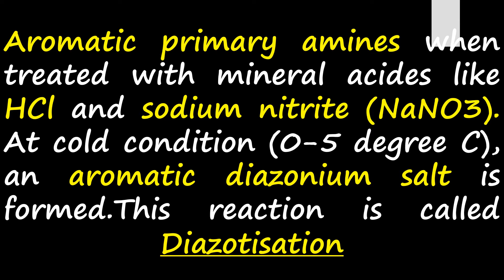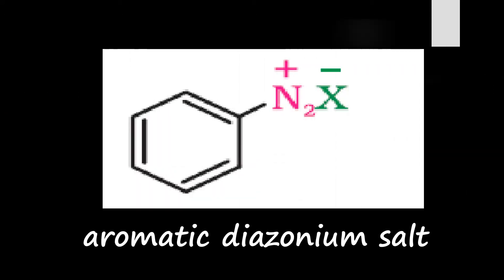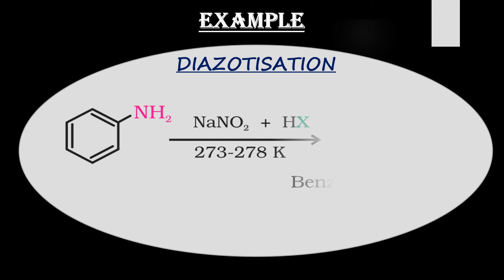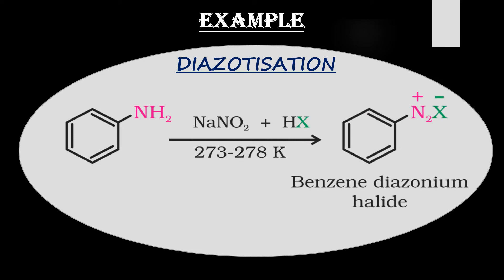This reaction is called diazotization. This aromatic diazotization is used for the preparation of aryl halide. When an aromatic primary amine is treated with mineral acids like HCl and sodium nitrite at cold conditions of 0 to 5 degrees Celsius (273 to 278 Kelvin), we get benzene diazonium halide as a product.